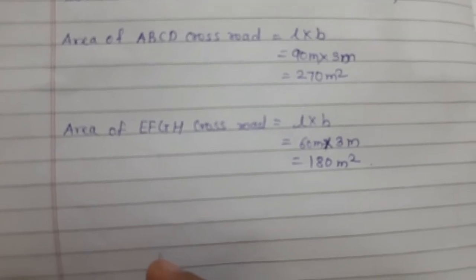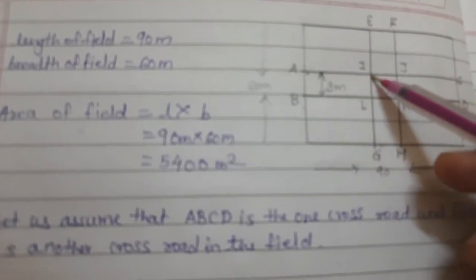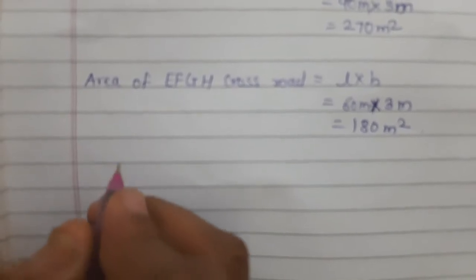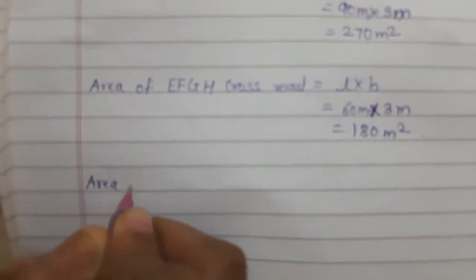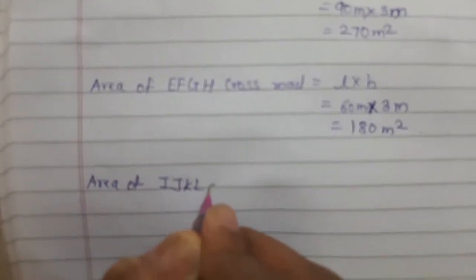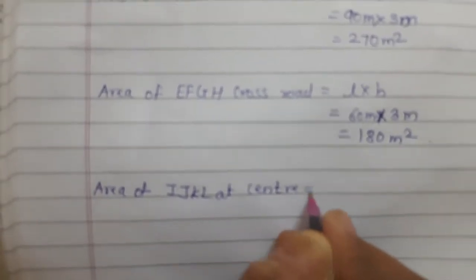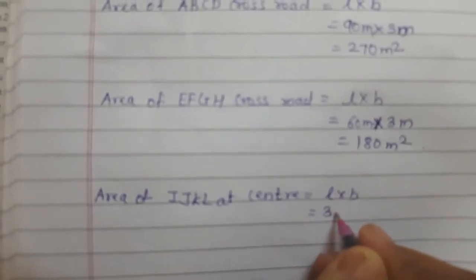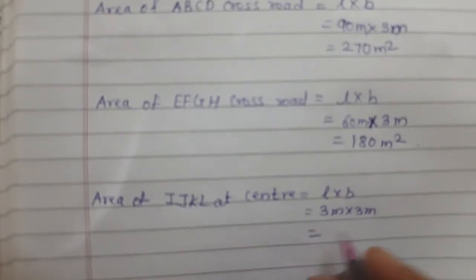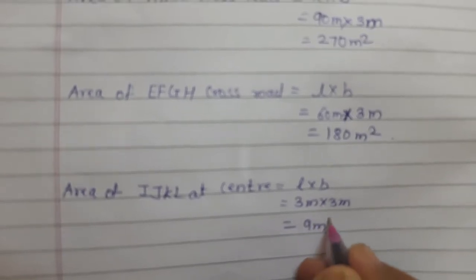Now area of IJKL at the center. This much part is 3 meter, from everywhere it is 3 meter. What is the width of this road? 3. So 3 into 3 = 9 meter square. Area of IJKL at center is 9 meter square.